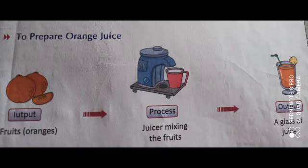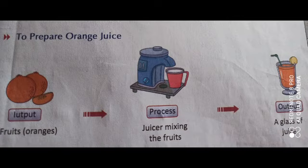Let's take another example of the IPO cycle which we use in our day-to-day life. If we want to prepare orange juice, the input is the orange. It is then processed in the juicer by mixing the fruit. This is one of the examples of the IPO cycle.